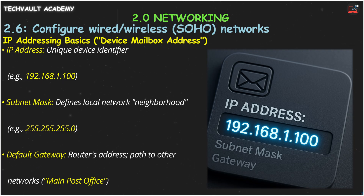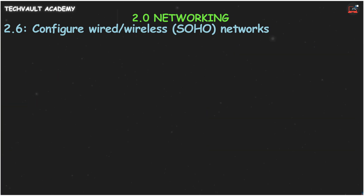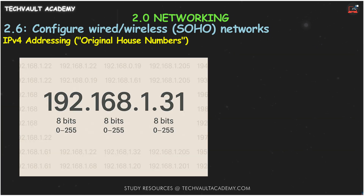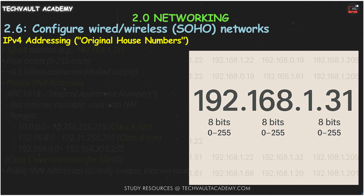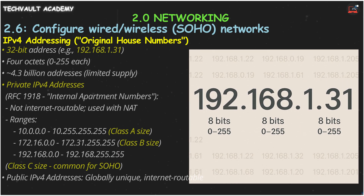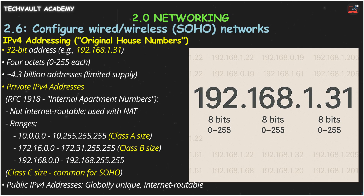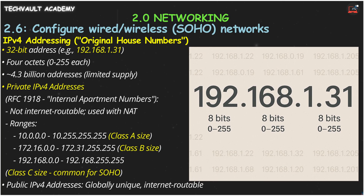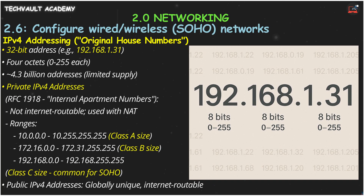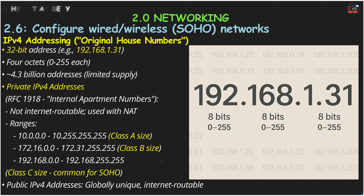The default gateway is the address of your local router — the main post office your device uses to send data outside its local neighborhood. Let's talk about IPv4, the original internet house numbering system. An IPv4 address is 32 bits long, shown as four decimal numbers separated by dots, like 192.168.1.31. Each number, or octet, is between 0 and 255. With about 4.3 billion possible addresses, we started running out.